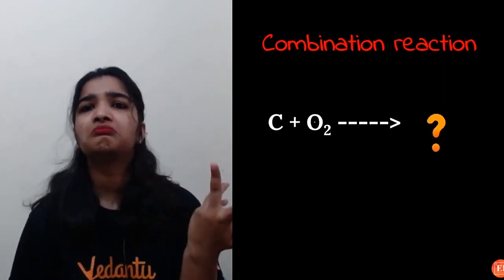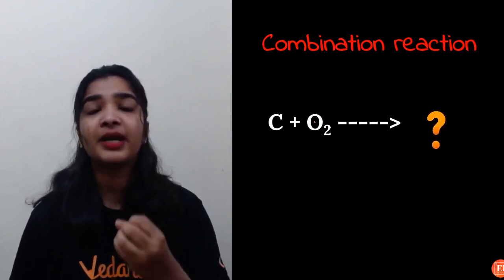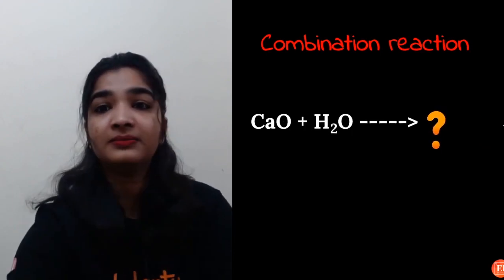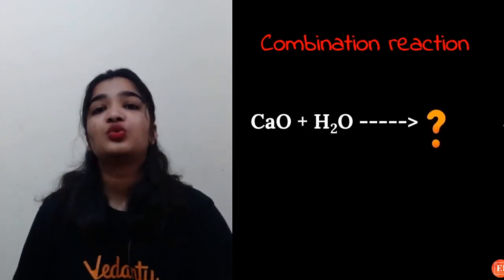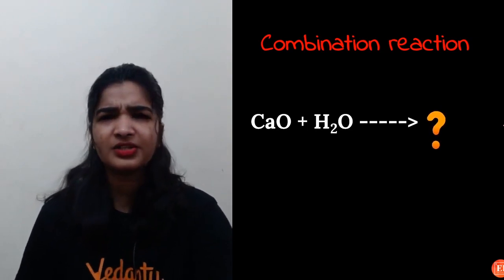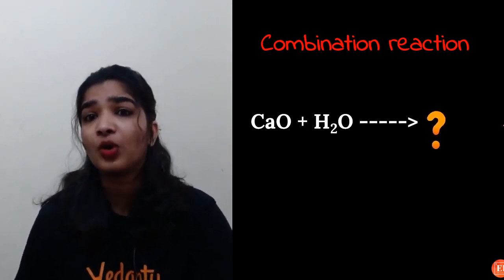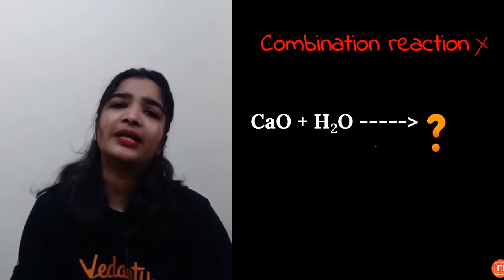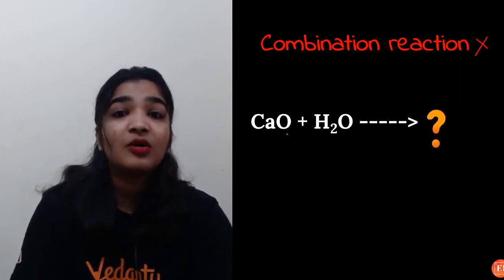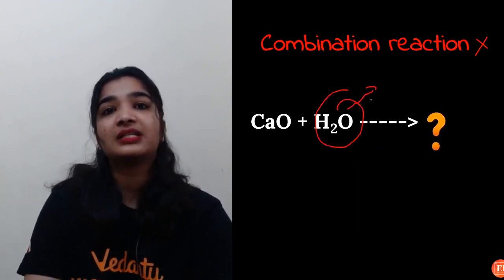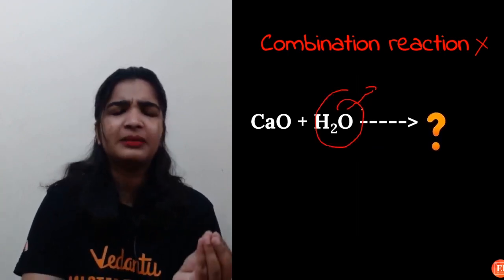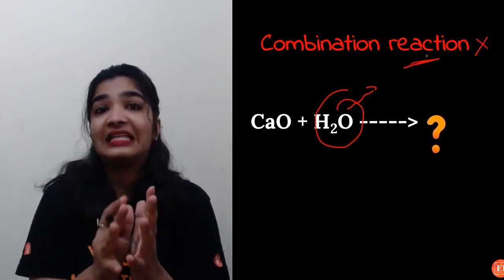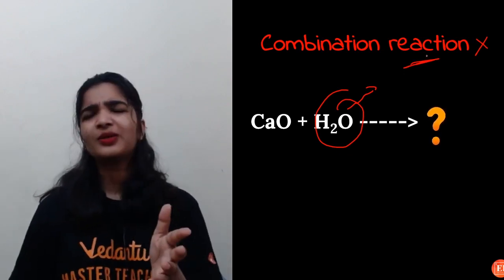Another example: C + O₂ — two elements combining, so it's a combination reaction giving CO₂. Now consider CaO + H₂O. Is this a combination reaction? It is not two bare elements, so you might wonder. Let's see what happens here — there are actually two types of combination reaction.